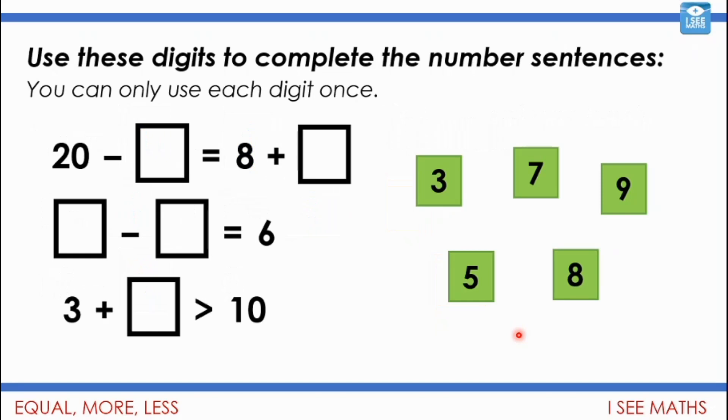So here's your main task today. And you're going to really have to, there's an added challenge here because we've got this sign that's come in here, this inequality sign here. So these two sides are no longer the same. And think about where are you going to start from this time? So use these digits to complete the number sentences. You can only use each digit once. So it's your main task today. Pause the video. Enjoy. Have a go.